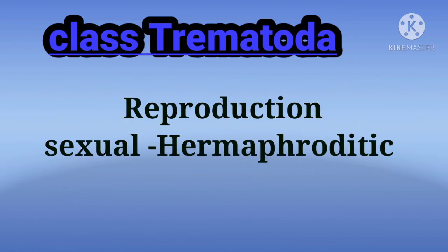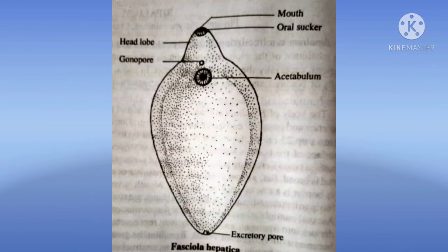The next point is reproduction. Reproduction is sexual. They are hermaphrodite, meaning both male and female reproductive organs are present in the same individual.